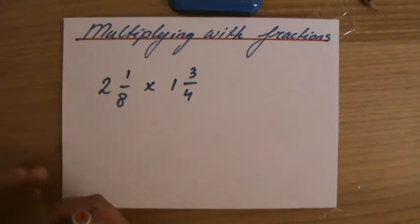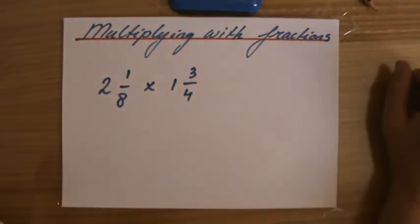2, 1 over 8, multiply that by 1, 3 over 4. And I'd like you to think about that. How will you do this?